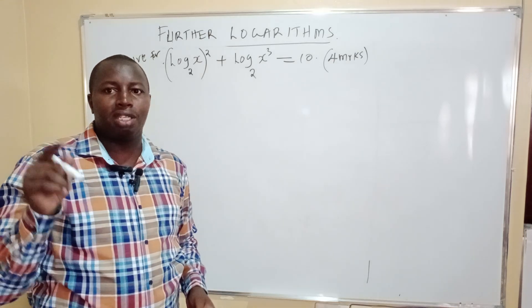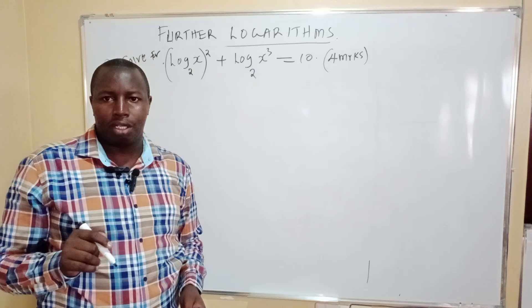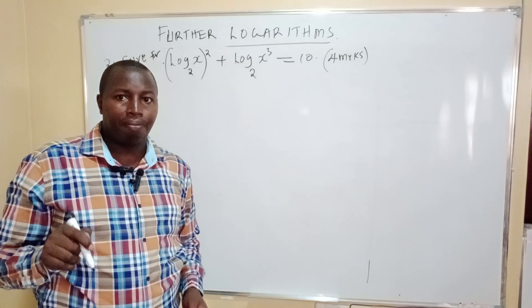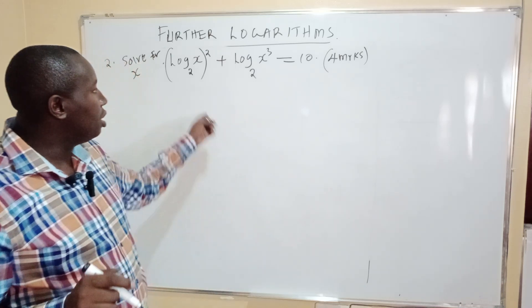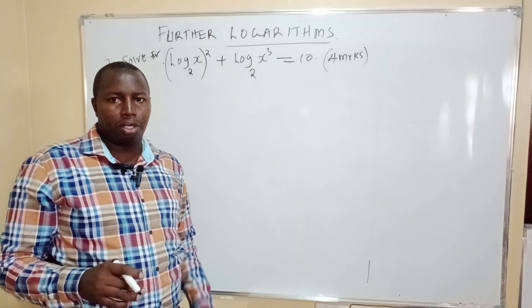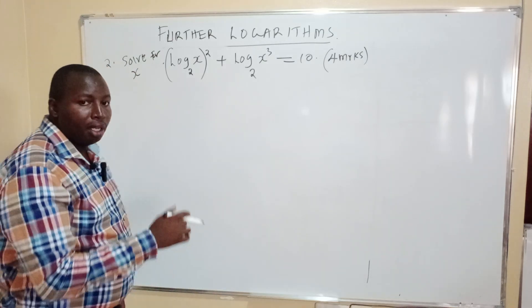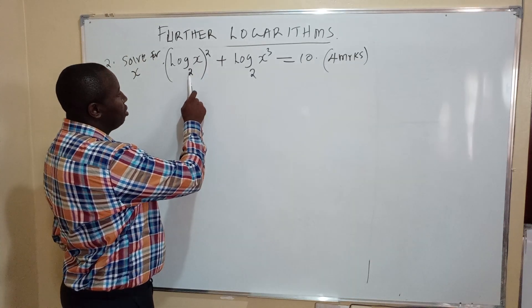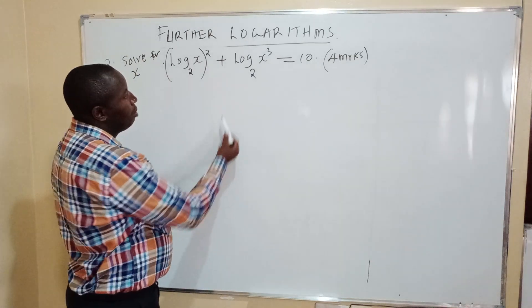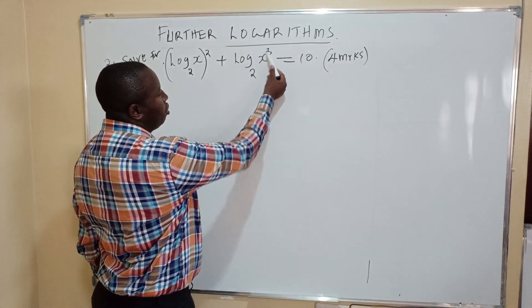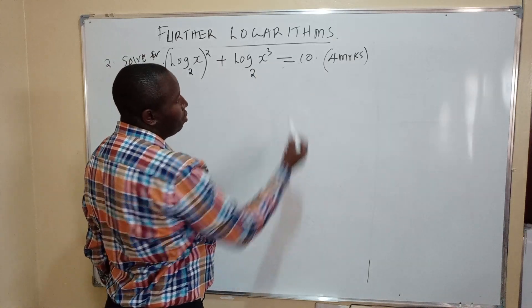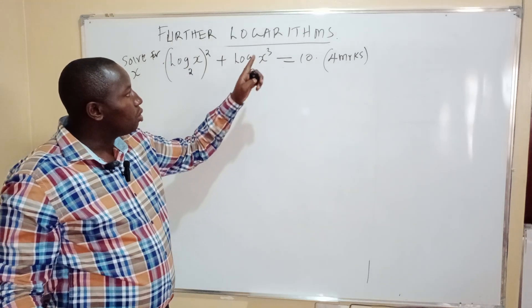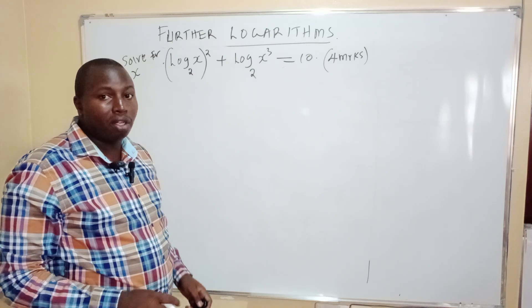Step number 1 is to check whether this question follows the rules of logarithms, and we will also check the base to which this question is given. Now let's go straight to the question of today. You are given: log of x to base 2, in brackets squared, plus log x cubed to base 2, equals 10. You are told to solve this equation to get the value of x.